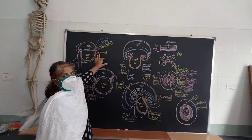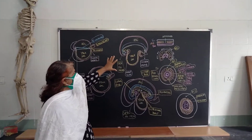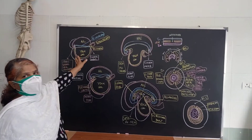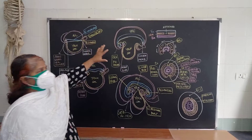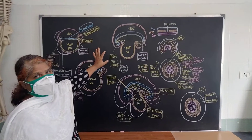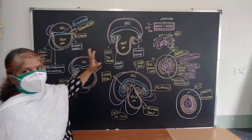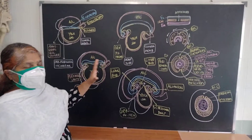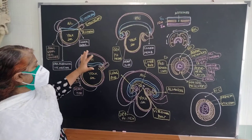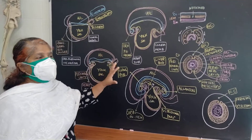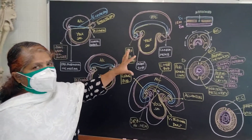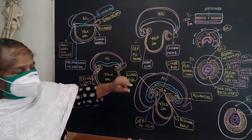Today we will see the formation of the gut tube before head folding, tail folding, and lateral folding — how the gut tube is formed from the yolk sac, and what is the respective position of the neural tube and the heart development.